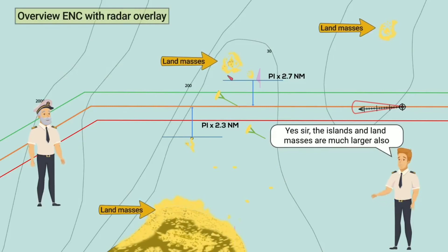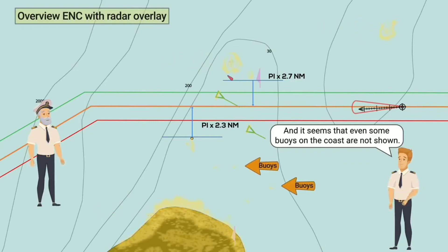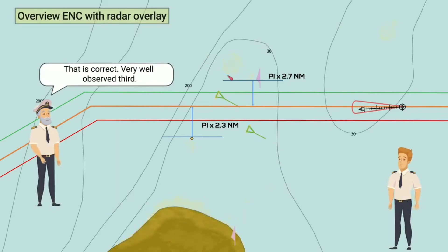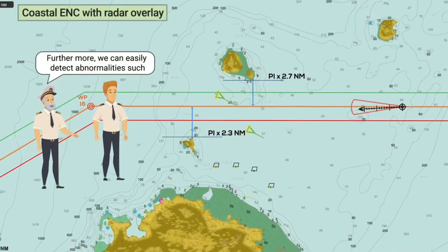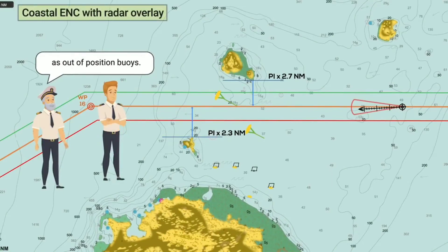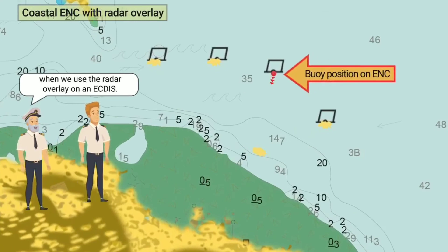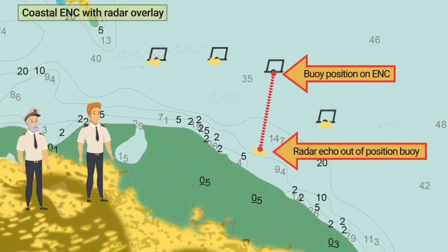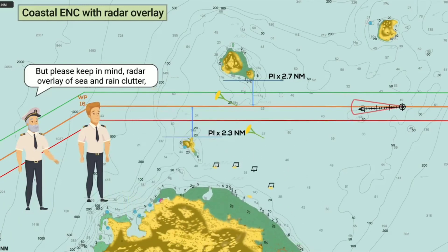Yes, sir — the islands and land masses are much larger, and their position is not aligned with the overview ENC. It seems even some buoys on the coast are not shown. That is correct — very well observed, Third. Furthermore, we can easily detect abnormalities such as out-of-position buoys, as seen here. The out-of-position buoys stand out when we use the radar overlay on an ECTIS.